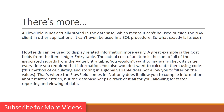Flow fields can be used to display related information more easily. A great example is the Cost field from the Item Ledger Entry table — the actual cost of an item is the sum of all associated records from the Value Entry table. You wouldn't want to manually check or calculate this every time. Flow fields allow you to compile information about related entries, and the database keeps track of it all, allowing for faster reporting and viewing of data.